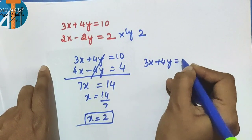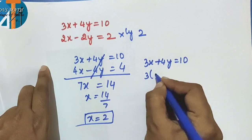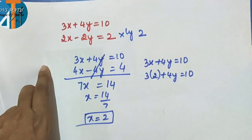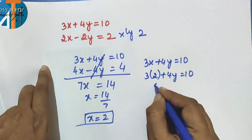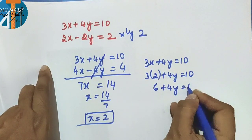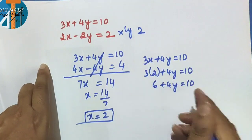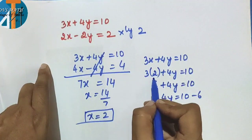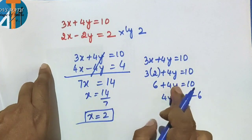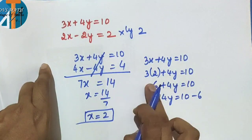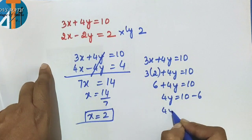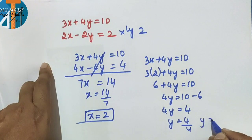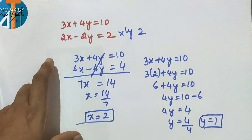Take 3x plus 4y = 10. Substitute x = 2: 3 into 2 plus 4y = 10, so 6 plus 4y = 10. Take 6 to the right-hand side: 4y = 10 minus 6 = 4. So y = 4 divided by 4, y is equal to 1.